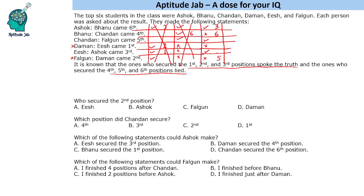We have taken Daman as a liar, and Daman is saying Ish came first. Since Daman is lying, Ish did not come first. But Ish is a truth teller, so Ish must be ranked in the top 3. Ashok is third, so Ish has to be second. That makes Chandan first, and Daman will be fourth.